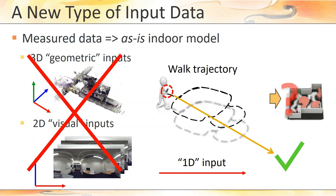However, we are still left with the first question. How can we generate a floor plan simply from a walk trajectory?